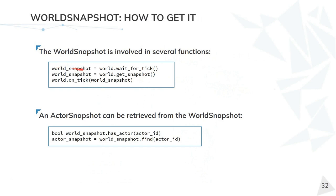In code, we can get the world snapshot. If we wait for a tick, we get the world snapshot automatically. We can also get the world snapshot with a dedicated method at any time. If we are in a callback waiting for onTick, we get the world snapshot as a parameter. For actor snapshots, we have two methods in the world snapshot: hasActor to check if an actor exists in the snapshot, and find to get the actor snapshot of that actor.